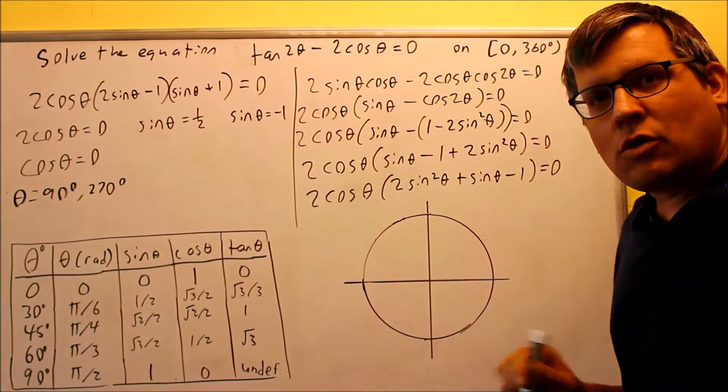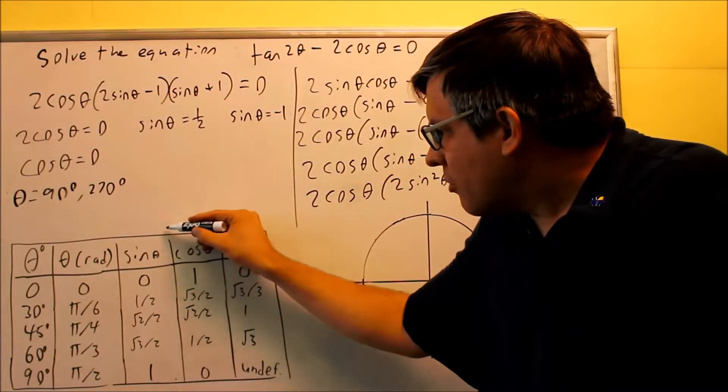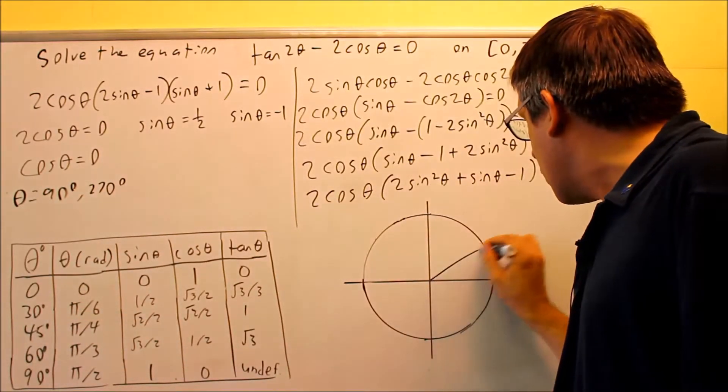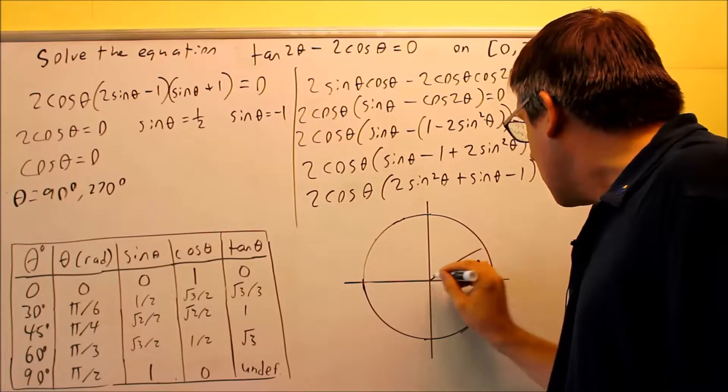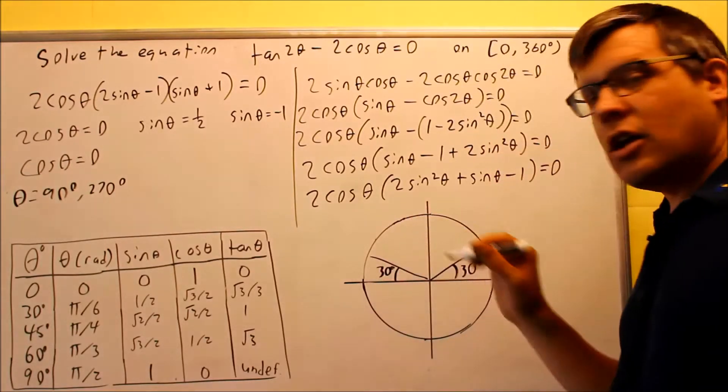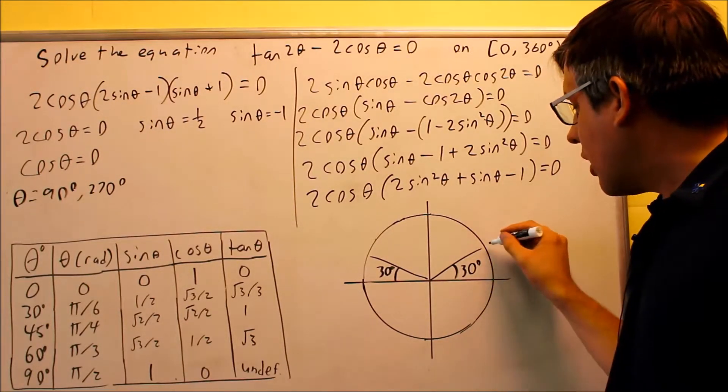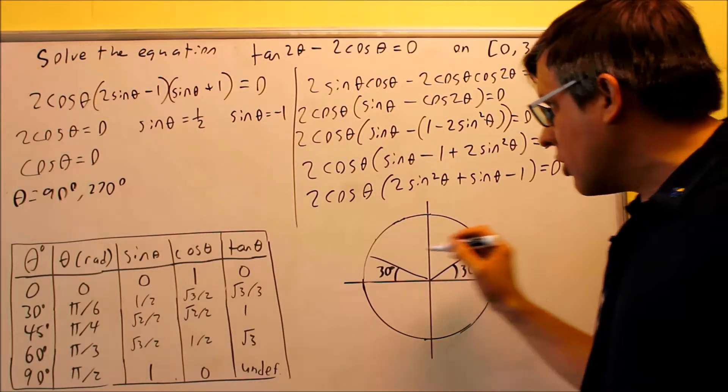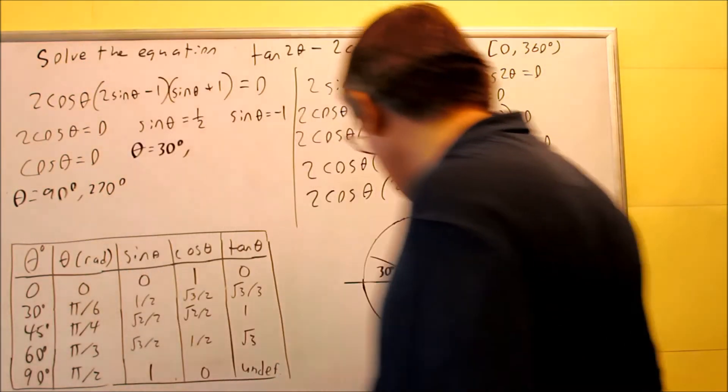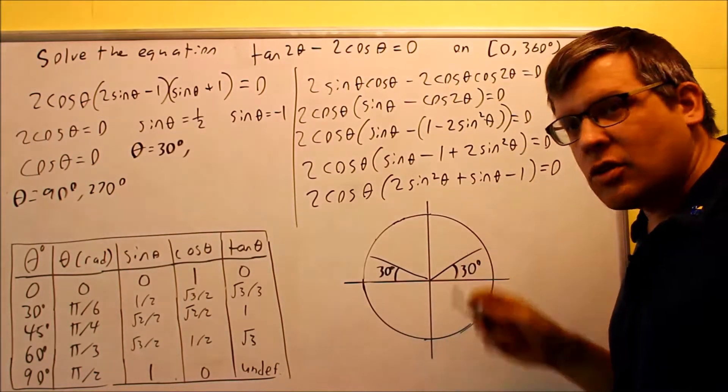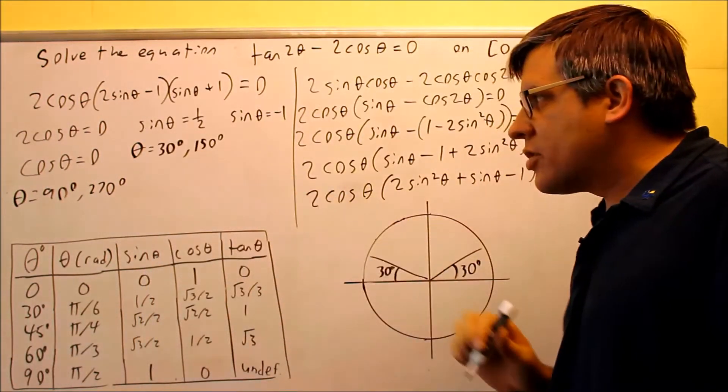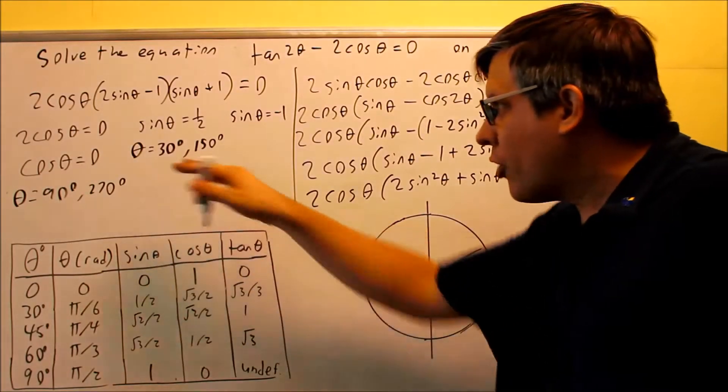Next, sine theta equals 1 half. Okay, sine in my table, here's 1 half. The angle that goes with that is 30 degrees. That's this one right here, 30. If I have another one over here, that's also equal to 30 because sine again is positive in the first and second quadrant. So I get one answer is 30, so theta is 30 degrees. The other one is 180 minus 30, that's 150. That's that one here. So now I get, so that's two more answers, so I have four answers so far.